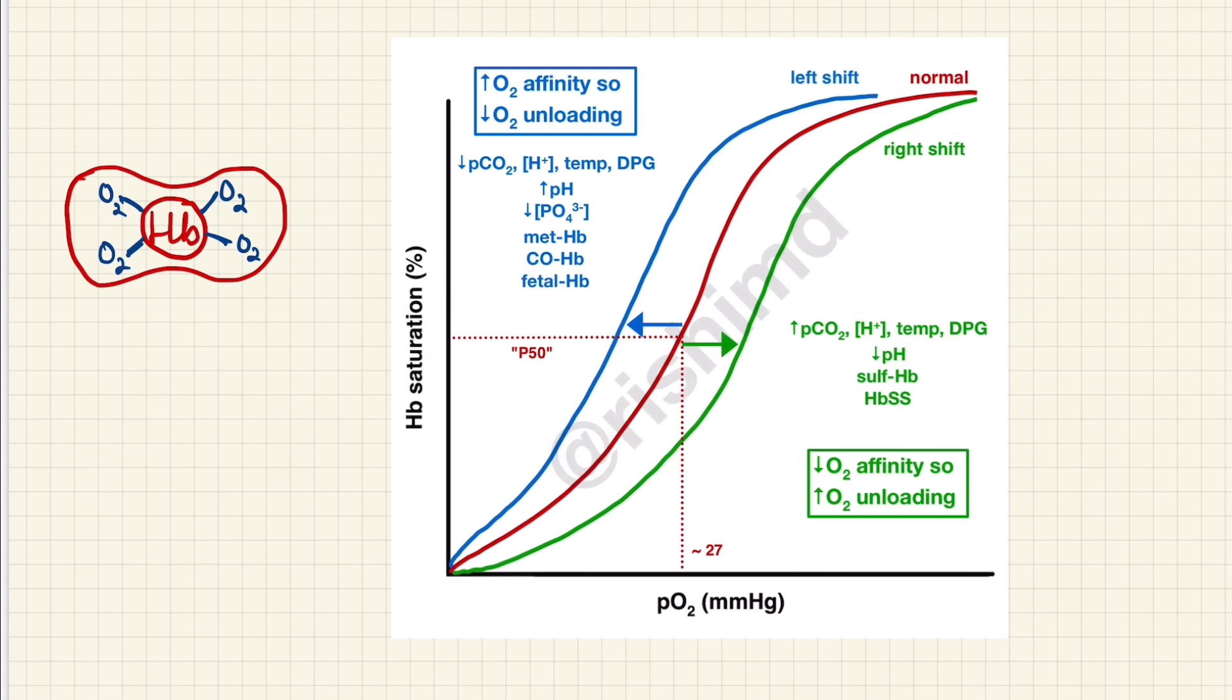Now there are some factors which affect this hemoglobin saturation of oxygen, and the mnemonic for this is CADET. CADET is: CO2, A is acid (that is H+ ions), D is 2,3-DPG, E stands for exercise, and T is for temperature. All of these CADET factors move this curve to the right—that is the right shift.